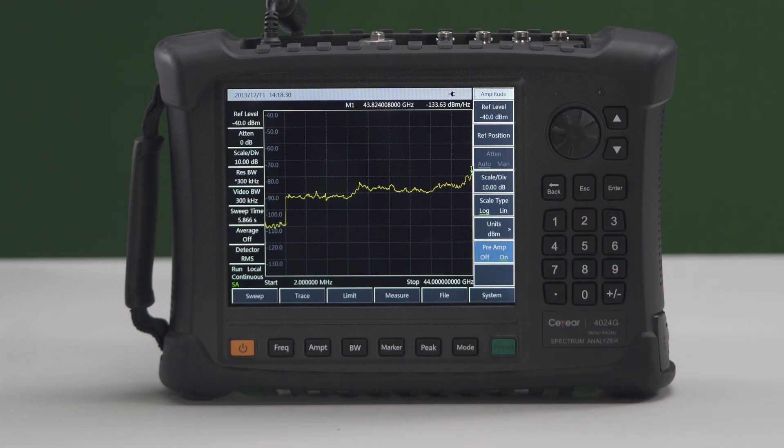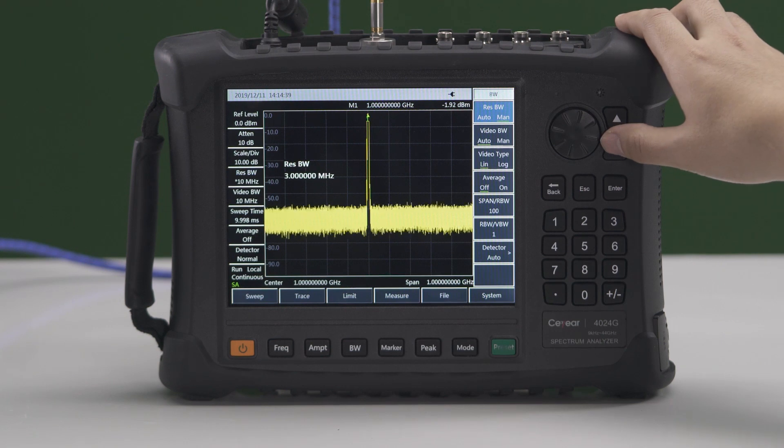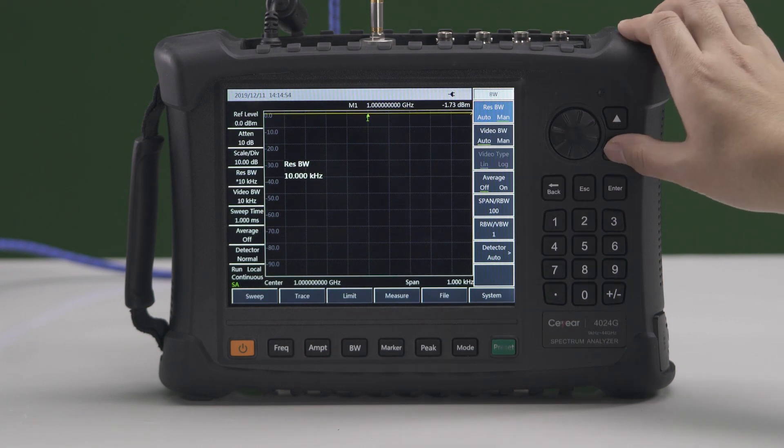C-Year 4024 has high sensitivity that can be further improved by the full band low noise amplifier. Excellent phase noise performance enables realistic observation and analysis for signals with high spectral purity. C-Year 4024 has an adjustable resolution bandwidth from 1 Hz to 10 MHz.